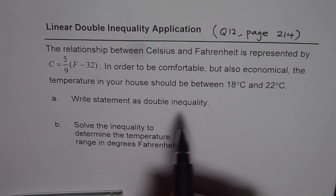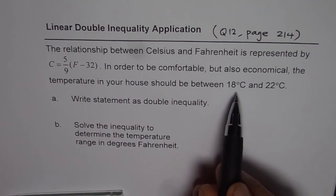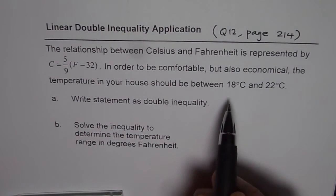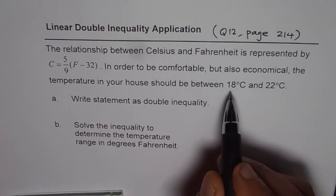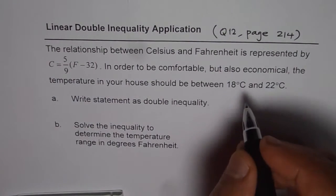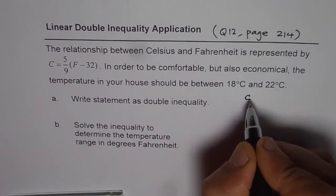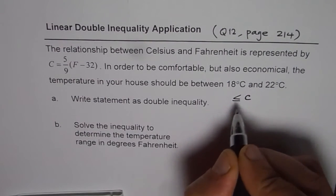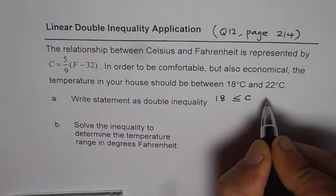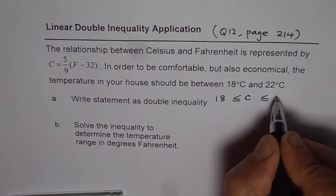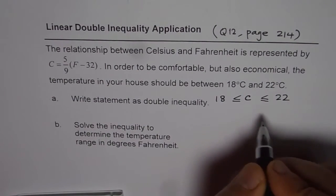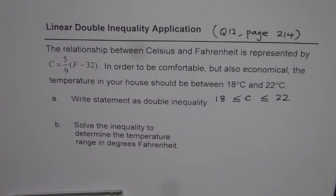In part A, we want to write it as a double inequality. The Celsius temperature is between 18 and 22, so we can say C is greater than or equal to 18 and less than or equal to 22. That is the double inequality which describes the situation.